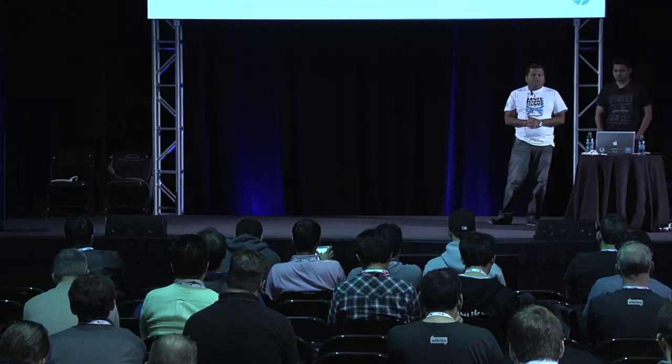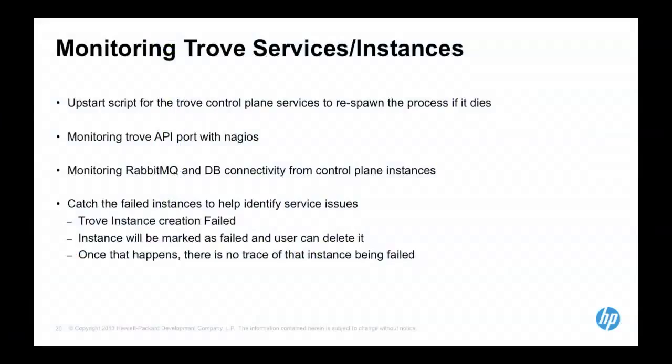One of our custom monitoring setups catches all instance failures. In Trove, if an instance fails, the user can go delete it and there's no trace of that instance having failed anywhere in the system. So as soon as an instance fails, we catch that event and grab all information about the instance, including its corresponding Nova instance logs, which helped us identify issues ahead of time.